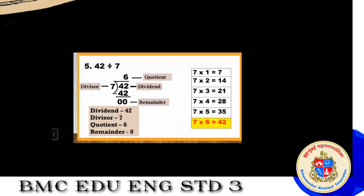Next: 42 divided by 7. I have already solved this for you. Say the table of 7 — 7 ones are 7, 7 twos are 14, 7 threes are 21, 7 fours are 28, 7 fives are 35, 7 sixes are 42. At the place of 6 we get 42, so write 6 and 42. Then 42 minus 42 is 0.